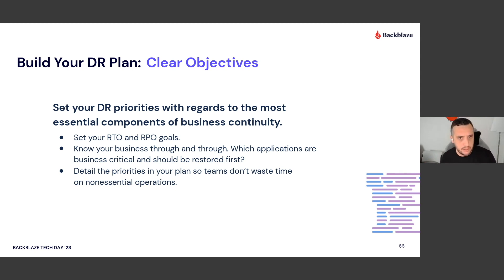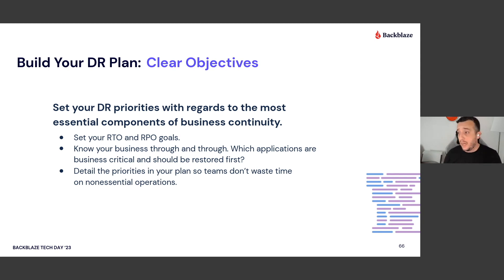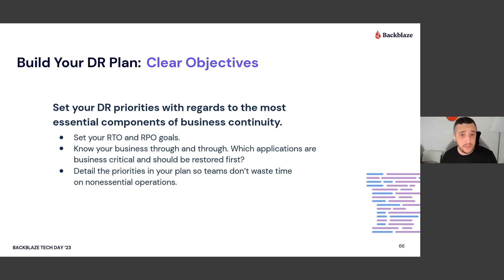RPO — recovery point objective — is how far back you need to be able to recover from. This affects how often you back up to an off-site location or a cloud storage vendor like Backblaze. For some folks, you have databases that change every hour or two and data isn't really expunged, so you don't need a long RPO. However, if you're dealing with data that is constantly changing and old versions are expunged, you want a longer RPO. As a general guideline, most folks I talk to use seven to ten days — but it really depends on your business needs.